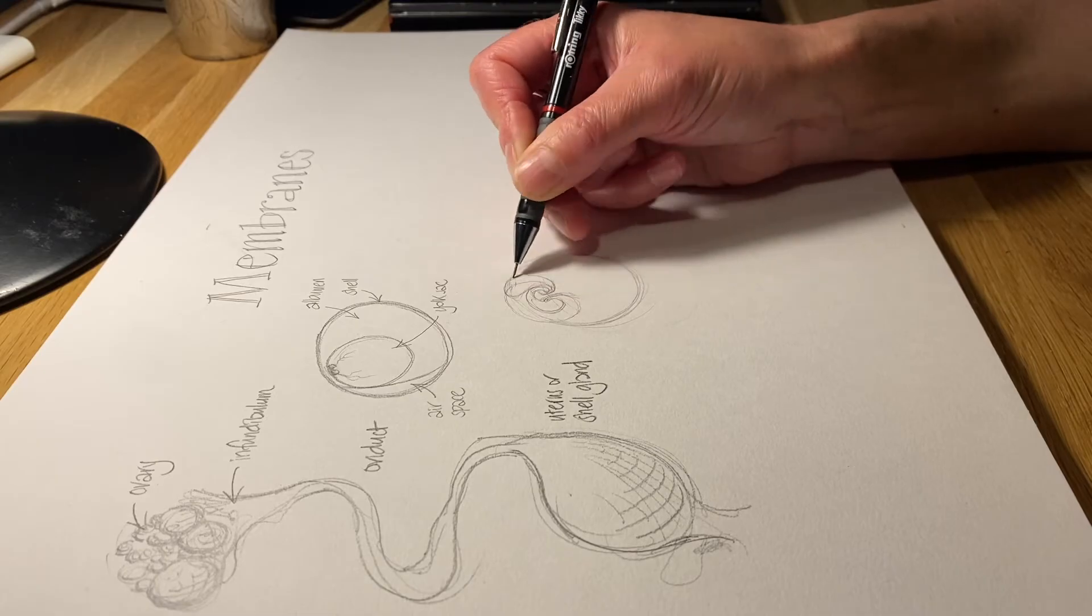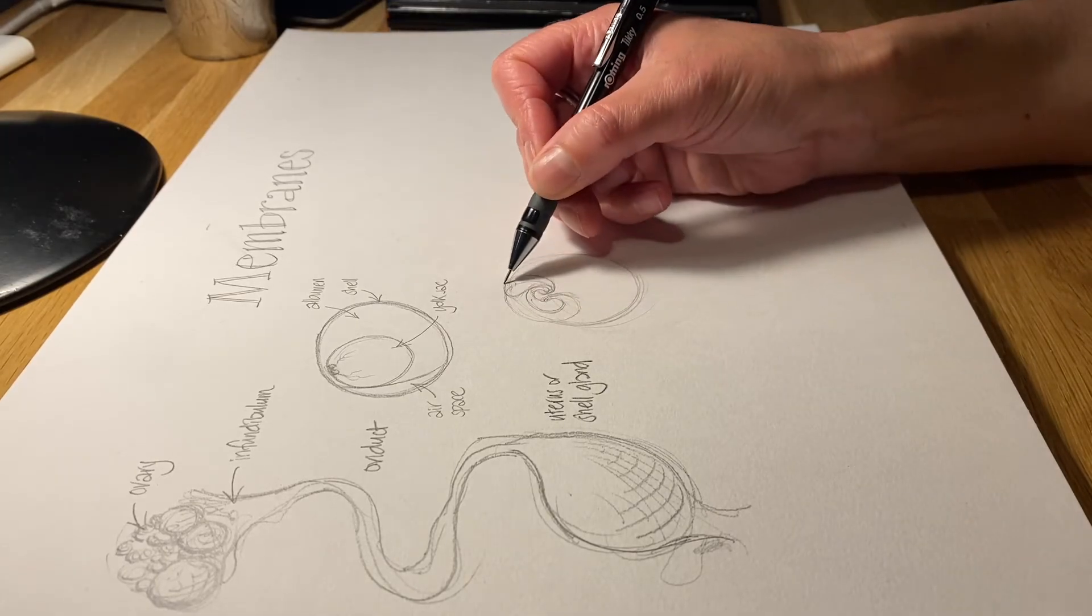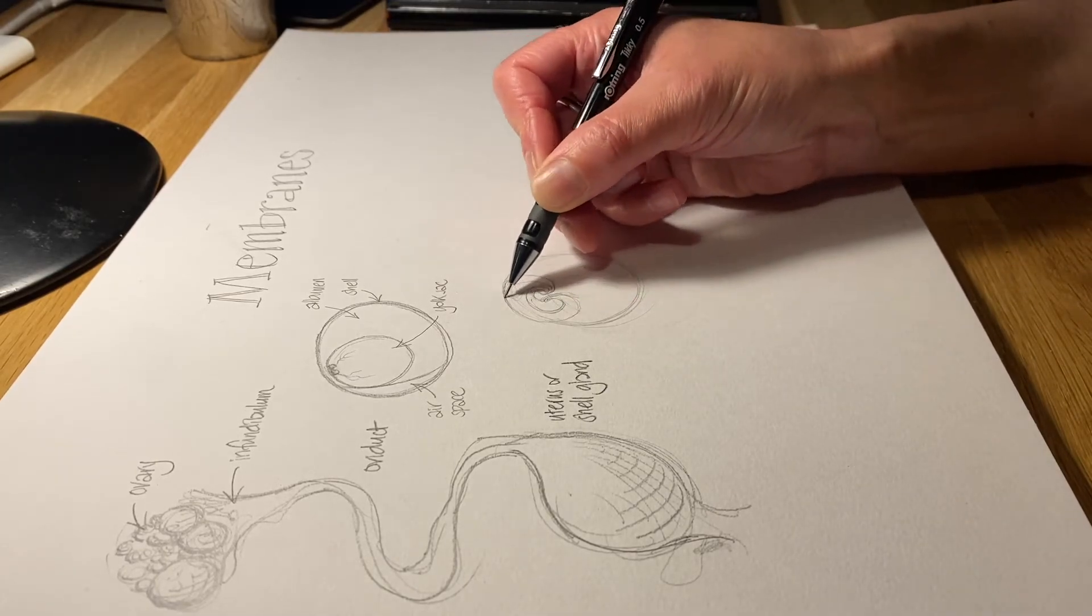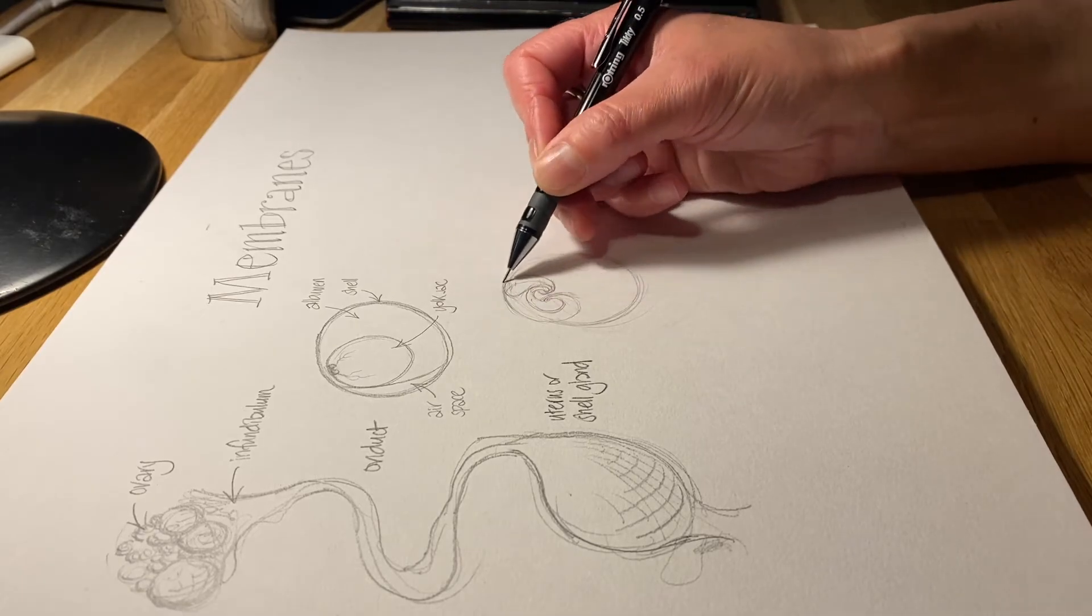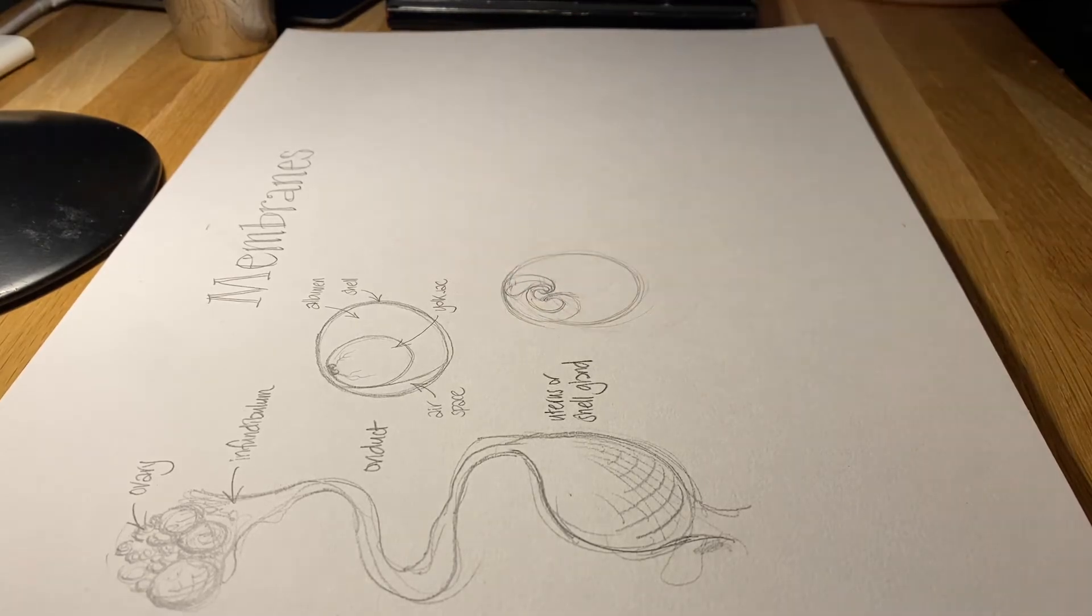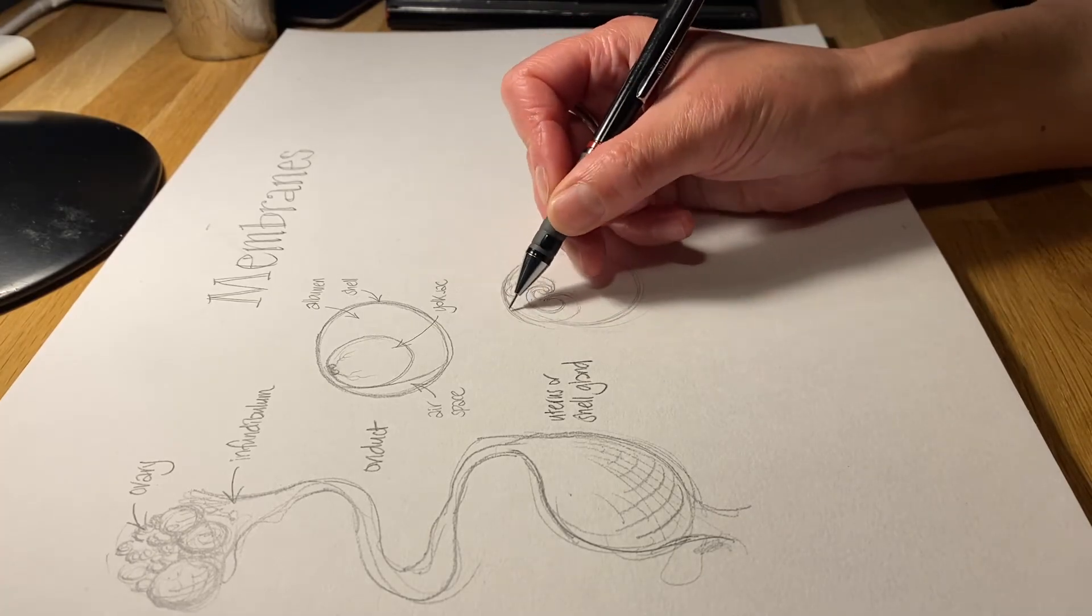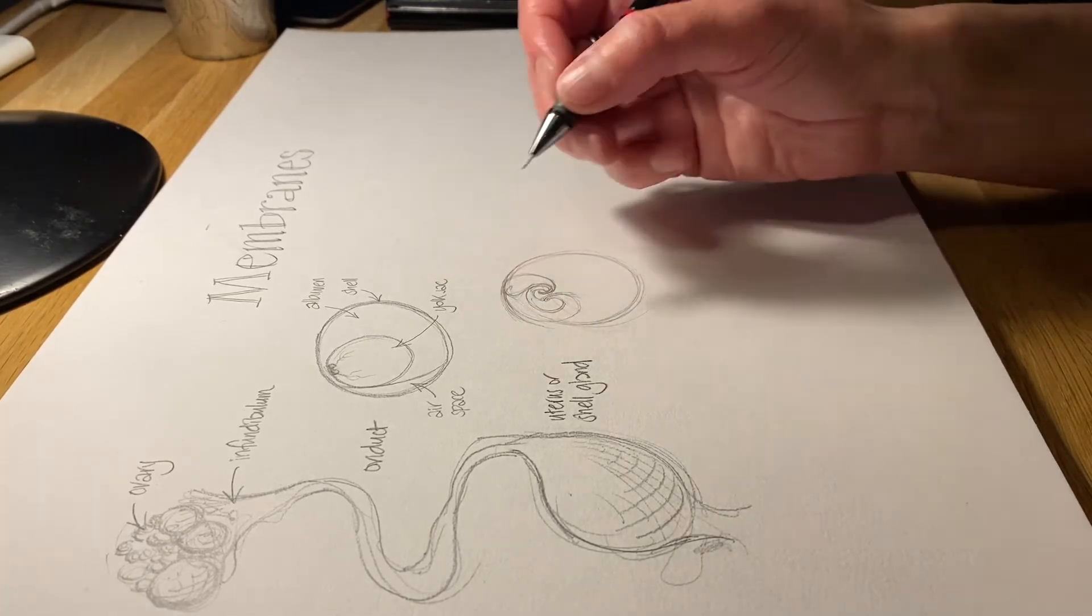There's also a protrusion of its gut, the allantois, which is lying up against the outer membrane around the developing embryo, the chorion, which I'm just illustrating on that one side of the egg just there.